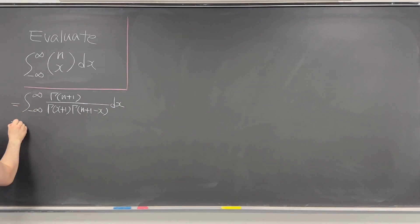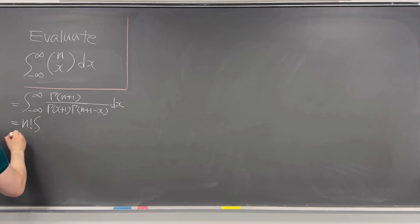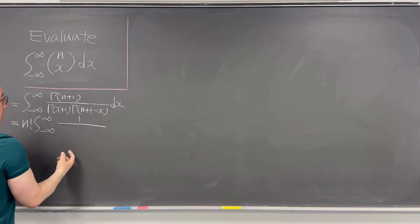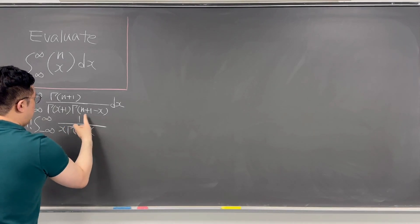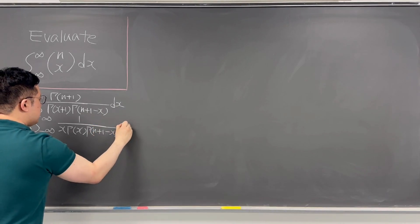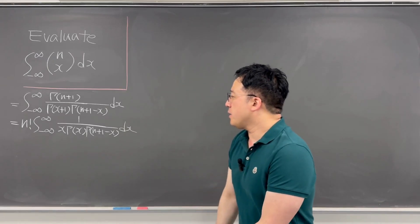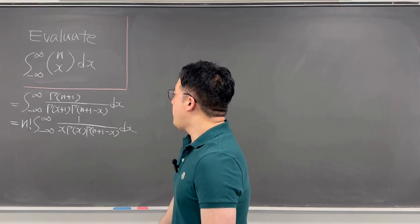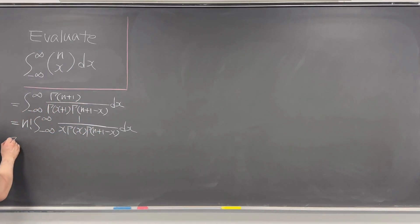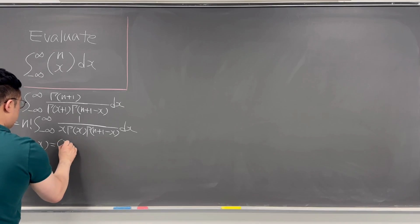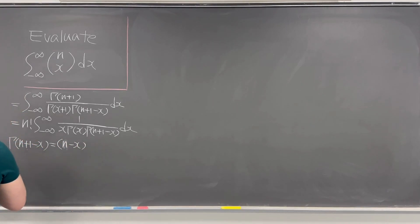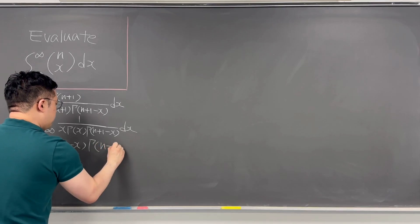If you work this out, it has to be n factorial times the integral from negative infinity to infinity of 1 over x times gamma(x) times gamma(n+1-x), with dx. Now let's talk about this gamma(n+1-x). The expression gamma(n+1-x) is the same as (n-x) times gamma(n-x).